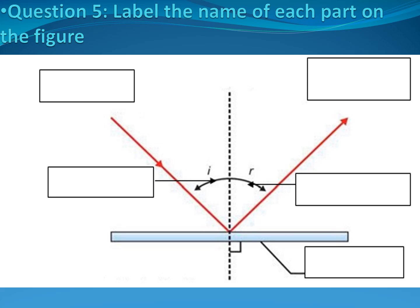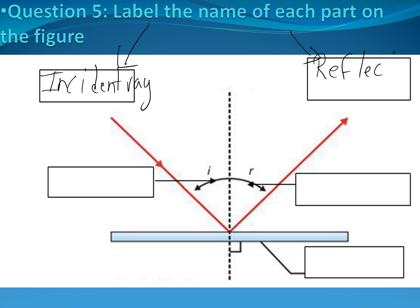Moving to question number five — label the name of each part on the figure. Karim: this part is called the incident ray. Excellent. Hamad: this part is called the reflected ray. Excellent.